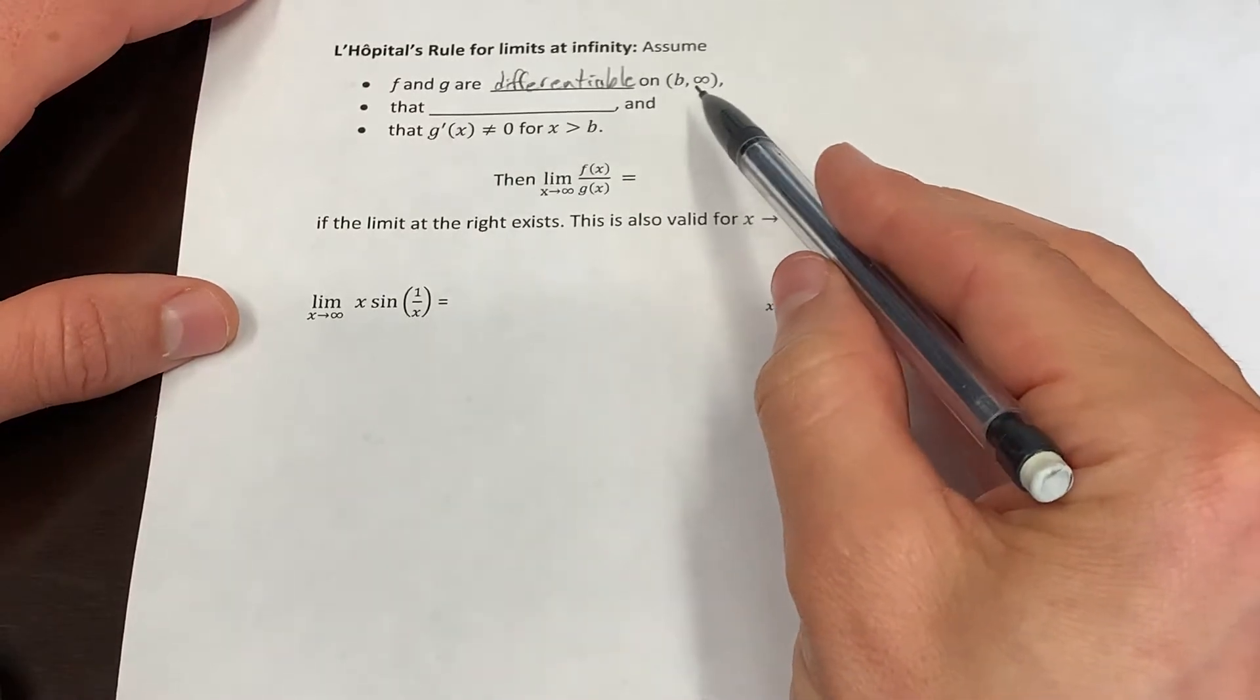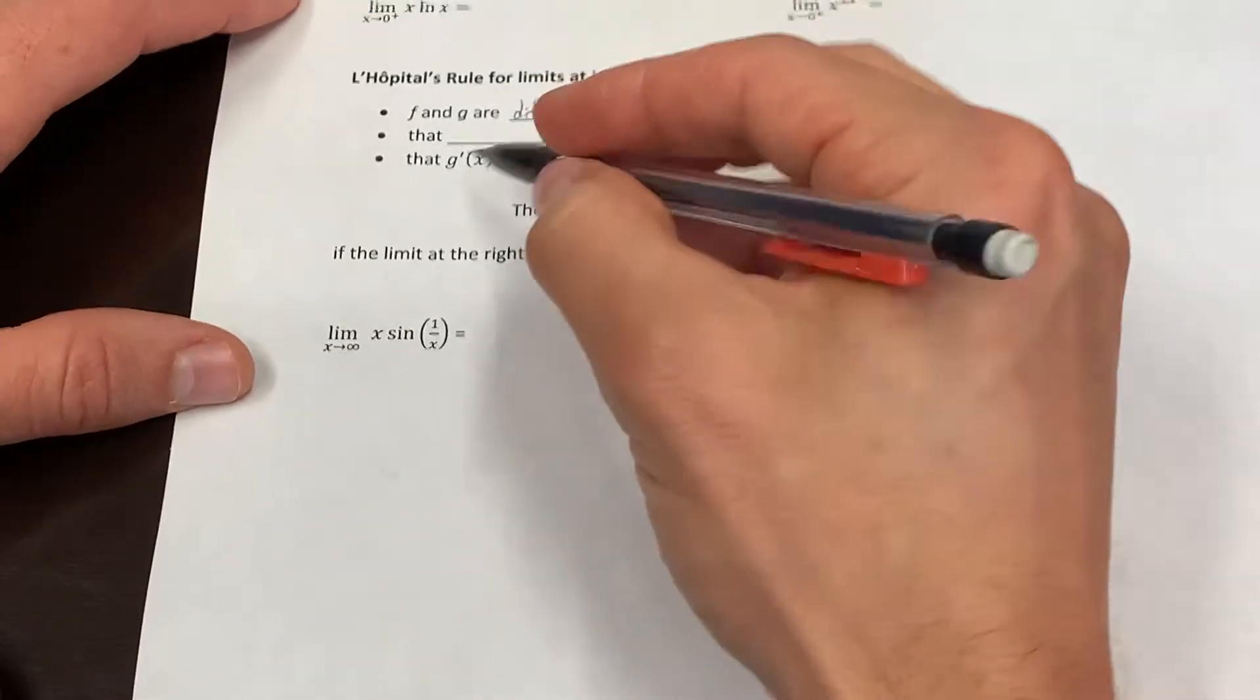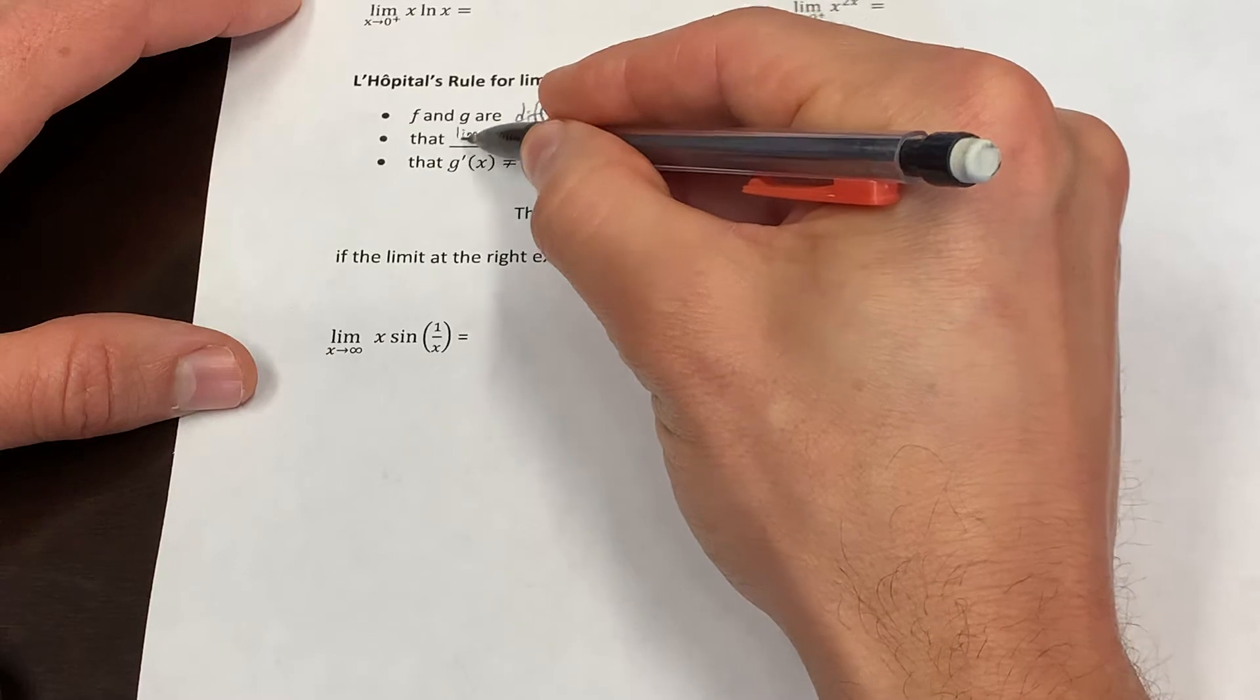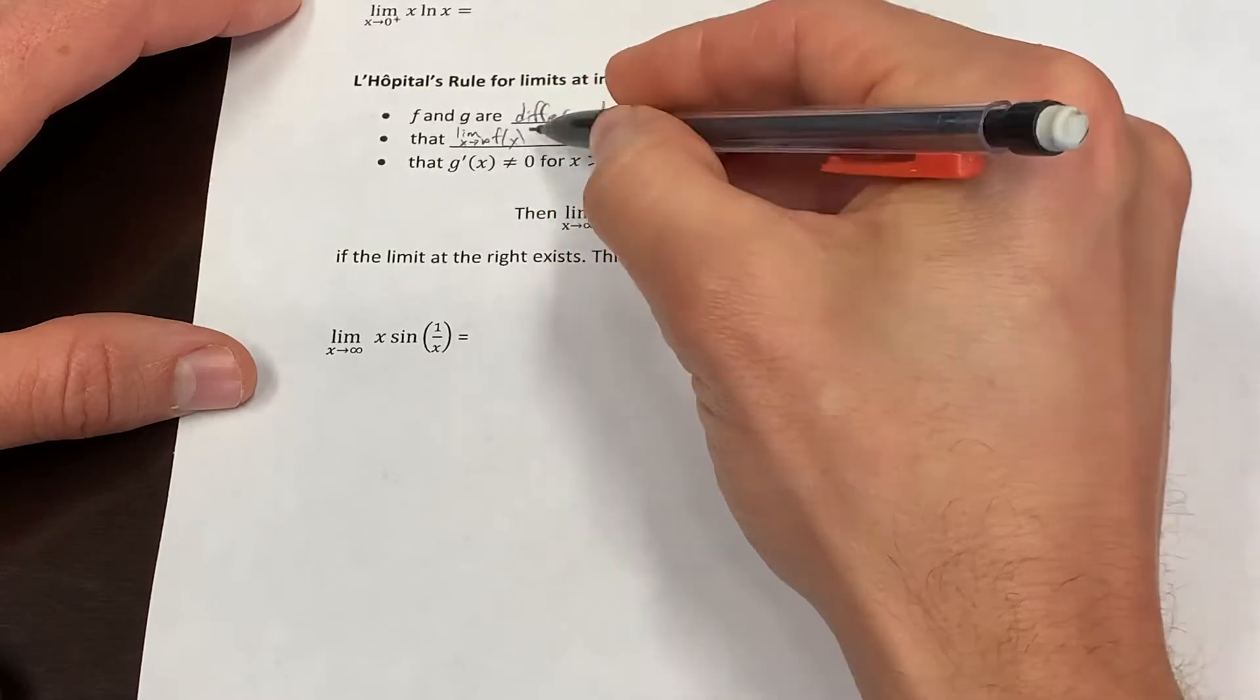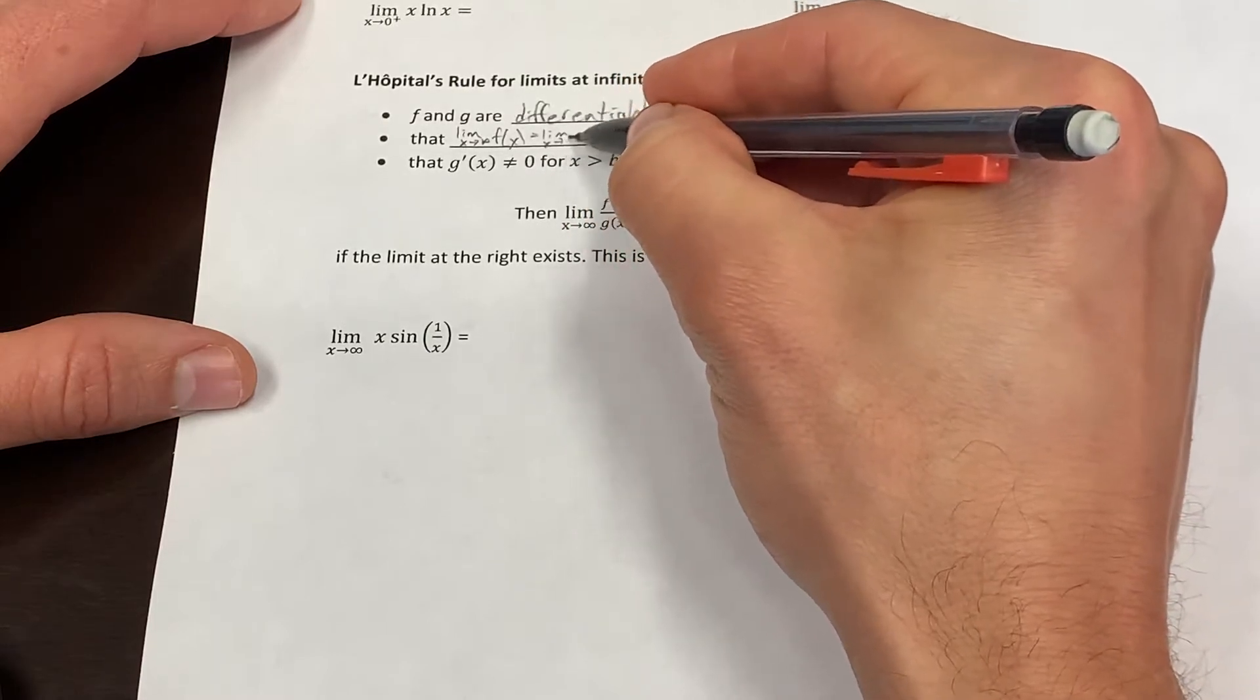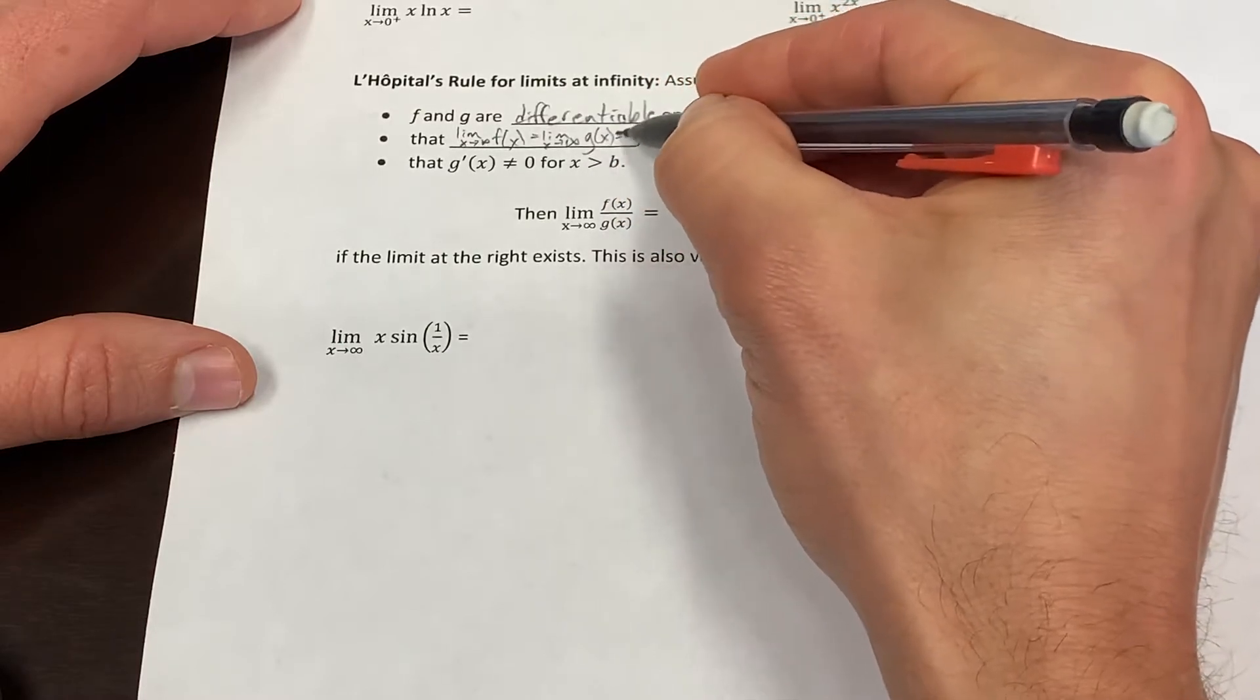but don't require them to be differentiable around a finite point. For x large enough, say anything bigger than b, it's differentiable. And the limit as x goes to infinity of f of x equals the limit as x goes to infinity of g of x both equal zero.